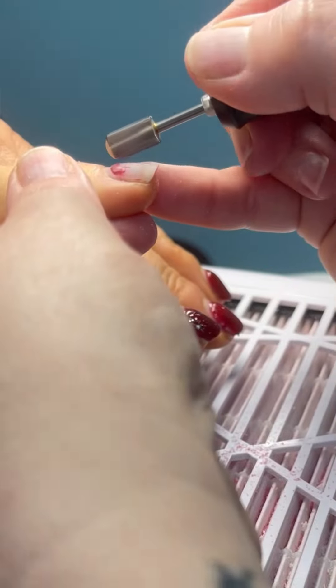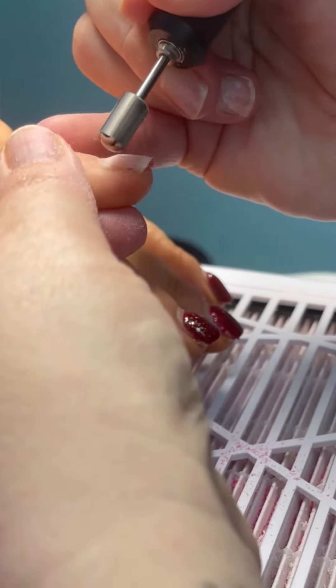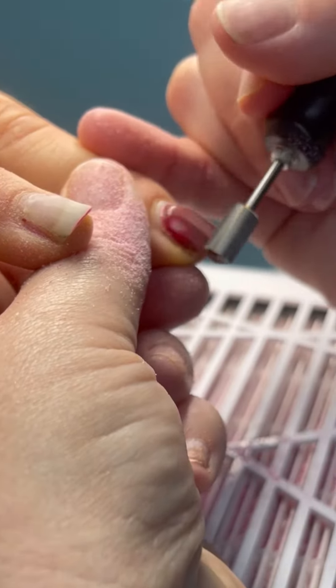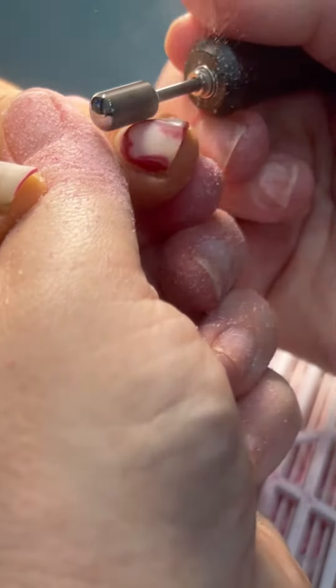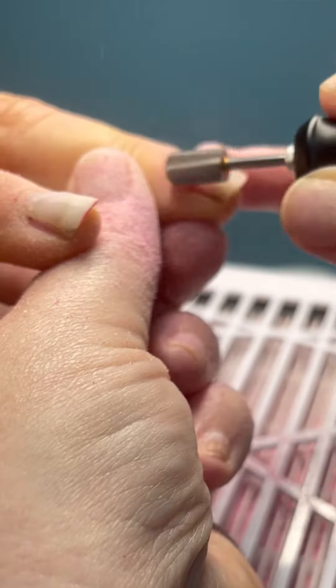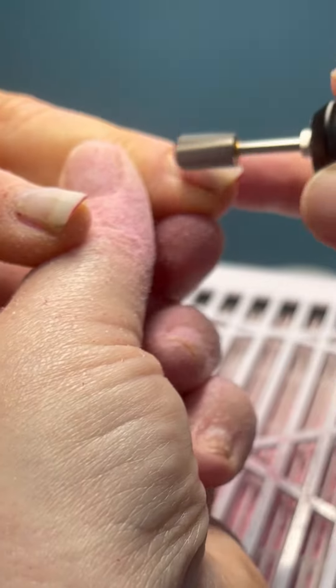And drop a follow so you don't miss out on any future tutorials. So once I've done that, I'll take that right down all the way to the clear layer. I always try and use a clear builder gel if I'm painting a color over the top, and then it's just so much easier to infill.